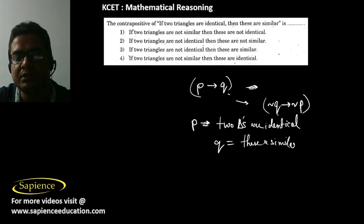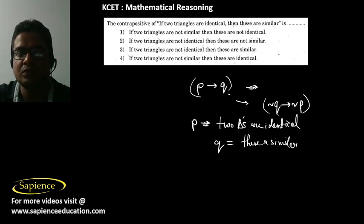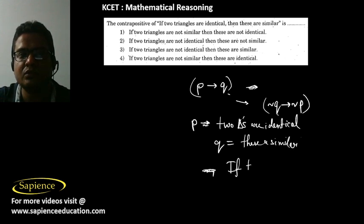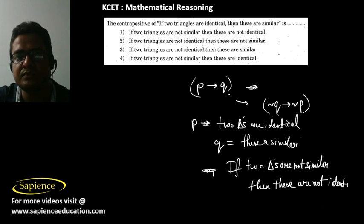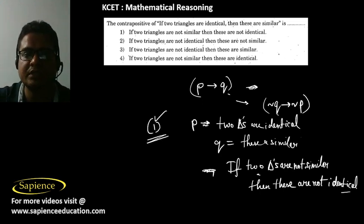So not Q means 'two triangles are not similar', and not P means 'these are not identical.' Therefore the contrapositive is: 'if two triangles are not similar, then they are not identical.' Option 1 is the correct answer.